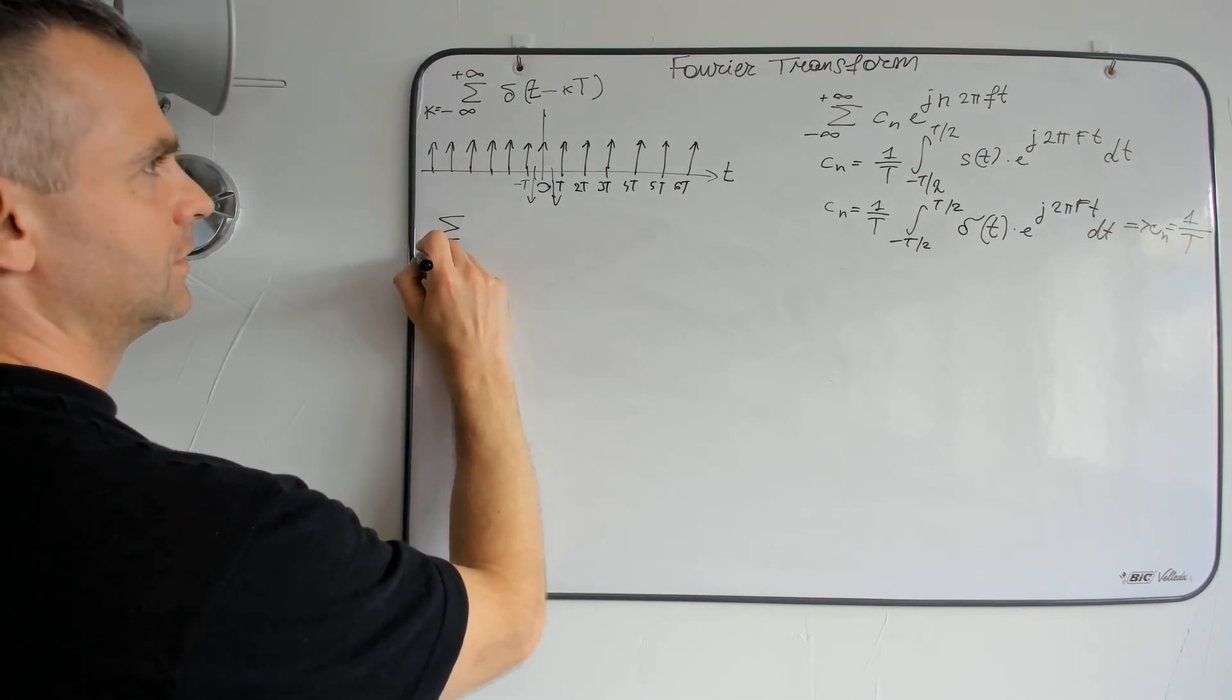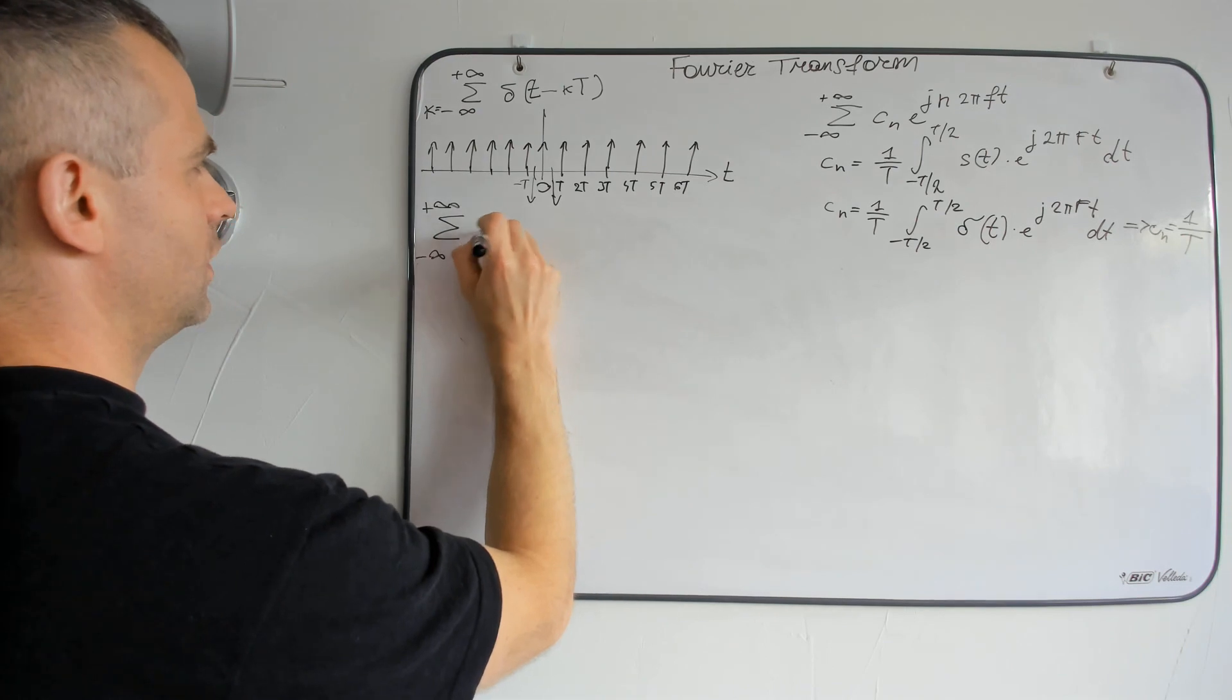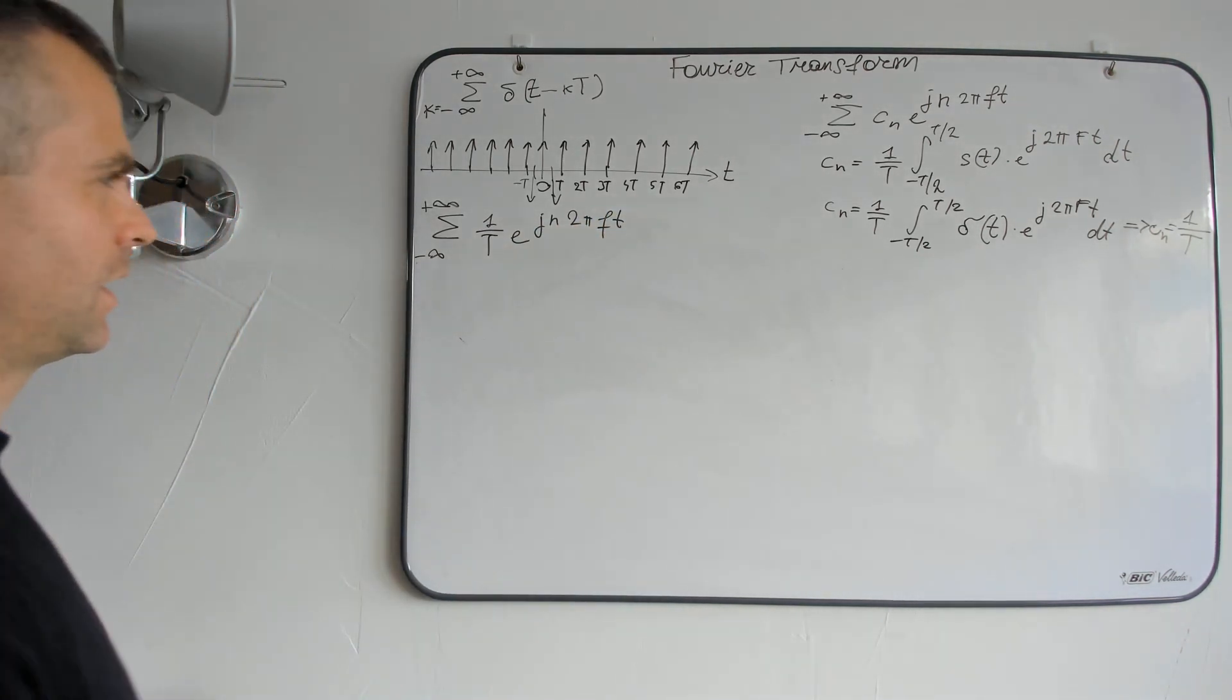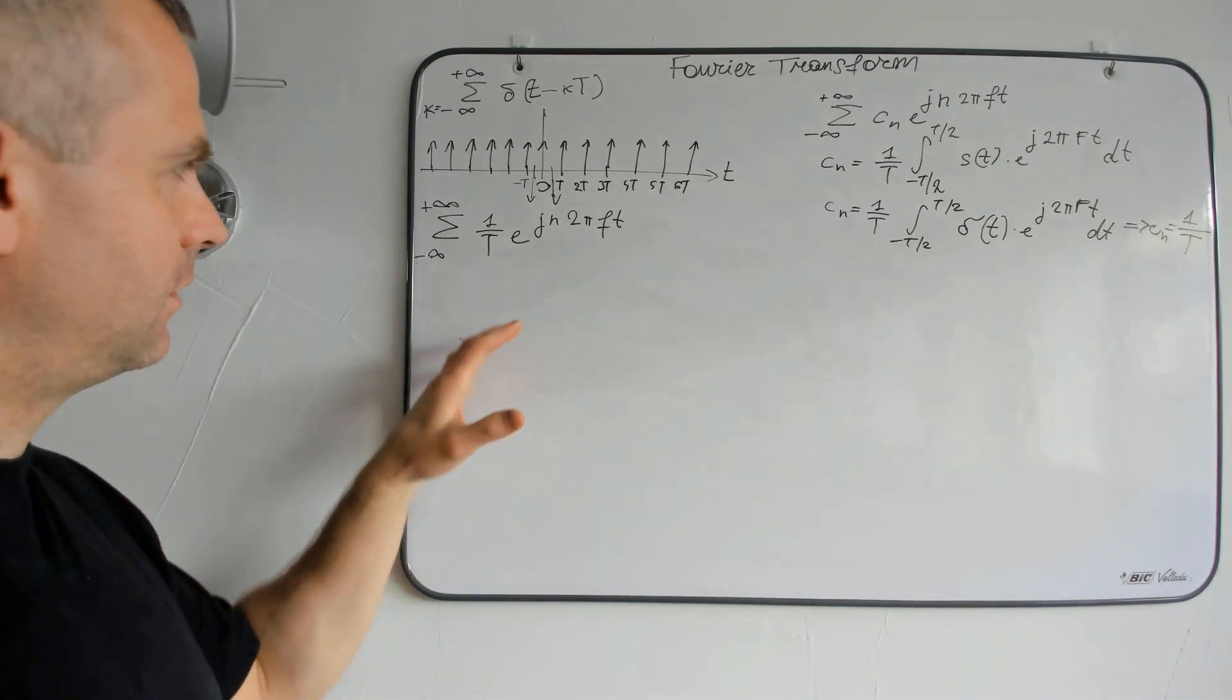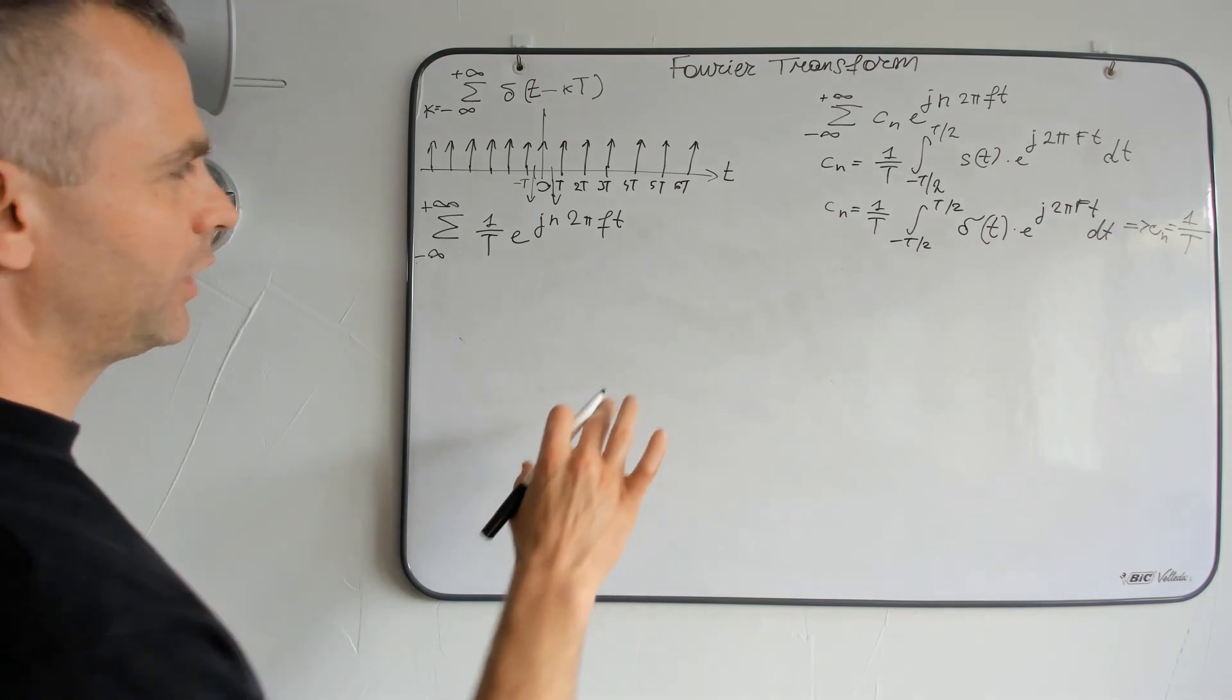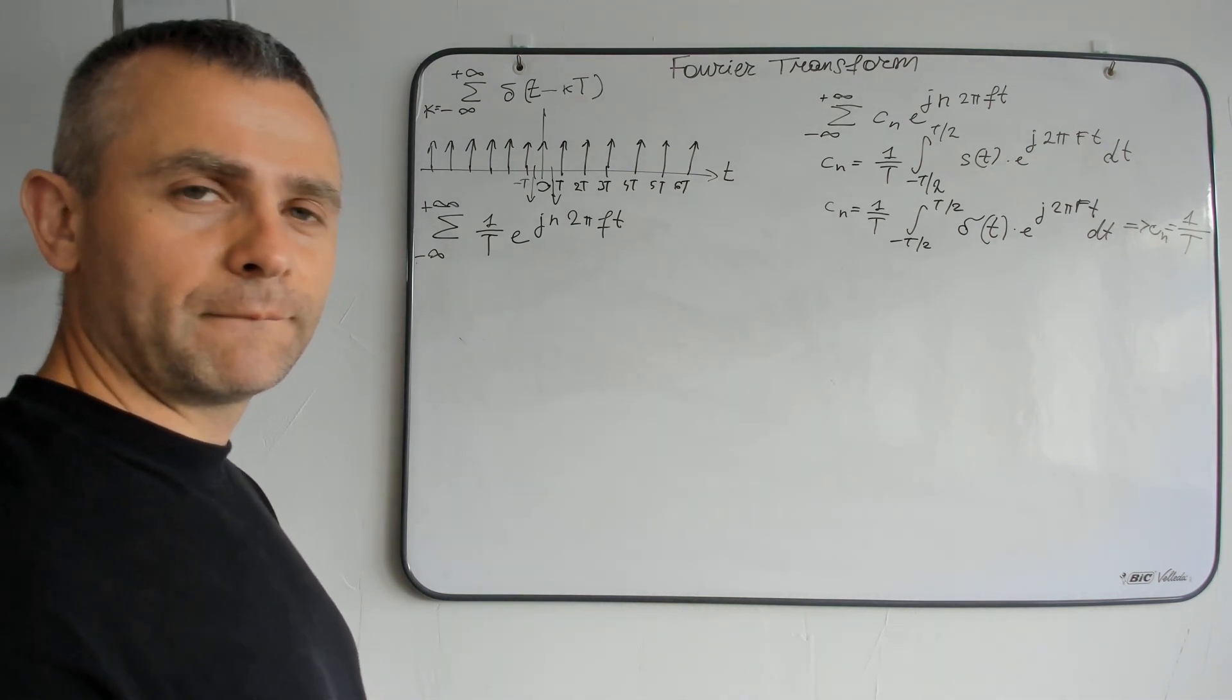from minus infinity to plus infinity, 1 divided by T exponential of jn2πf t. How to get the Fourier transform of this representation, of this relation? Well, we will start from frequency representation of a delta function.